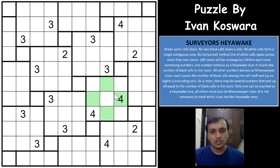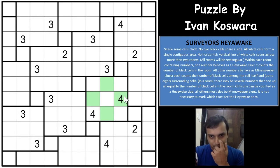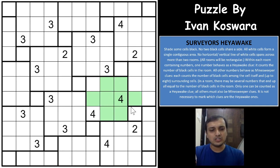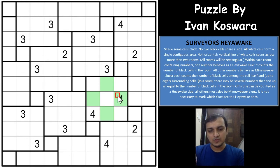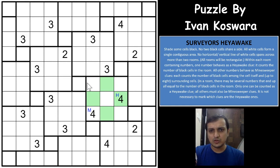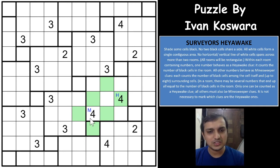Many solvers were stuck on the starting logic. If you see here, this 4 cannot be a Minesweeper clue. The moment you take this 4 as a Minesweeper clue, again those 4 middle-edge cells will be unshaded and you have only 2 cells remaining for the 4 to be fulfilled. Which means this cell will be the Heyawake clue — I'll mark it with a different color — and the other cell will be the Minesweeper clue.